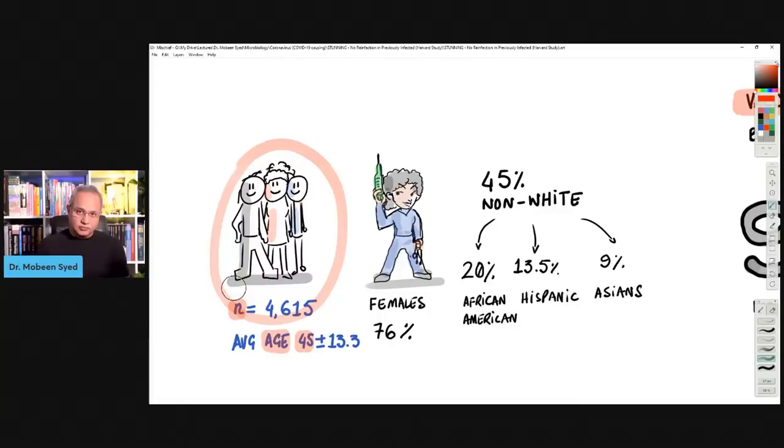They said that we didn't have sufficient data size to calculate vaccine efficacy throughout this time for individual vaccines and compare them to the not vaccinated. So this was a pooled vaccine result. And they called a case that was PCR positive and was verified by the Massachusetts Health Department or the appropriate agencies. Then, as we saw before, the number of healthcare workers were 4,615. Their age was 45, median age, plus minus 13.3 years. So 58 and 32. 76% were females. 45% were non-white. In them, 20% were African-American. So this 45% breakdown. 13.5% were Hispanic. 9% were Asians.